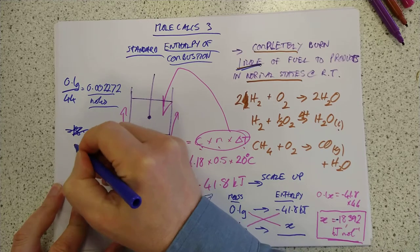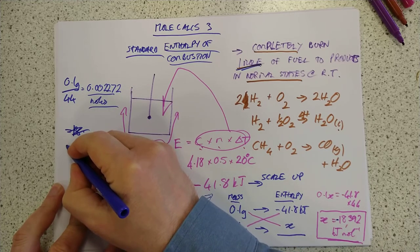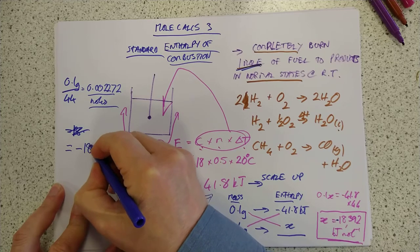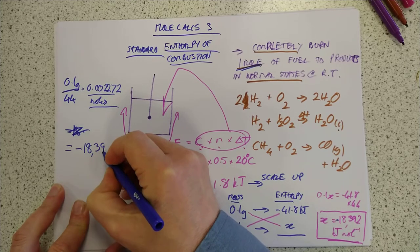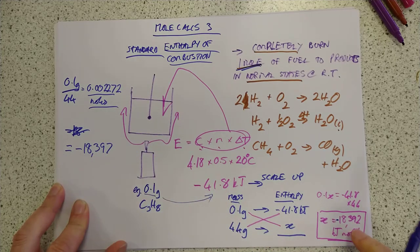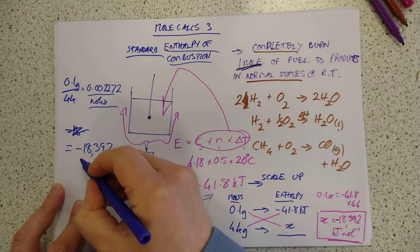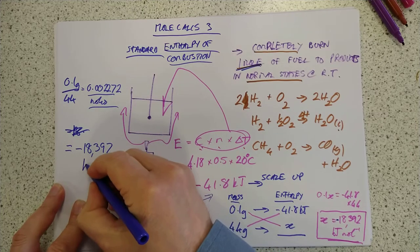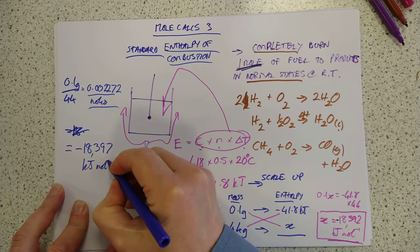We do indeed end up with a negative 18 point. Sorry. A point. My goodness. Hey, get your specs on. Equals a negative 18,397. Interestingly. If you do it that way, probably because of rounding errors. Which is why I like proportion because there's less rounding involved. So that would also be kilojoules per mole.